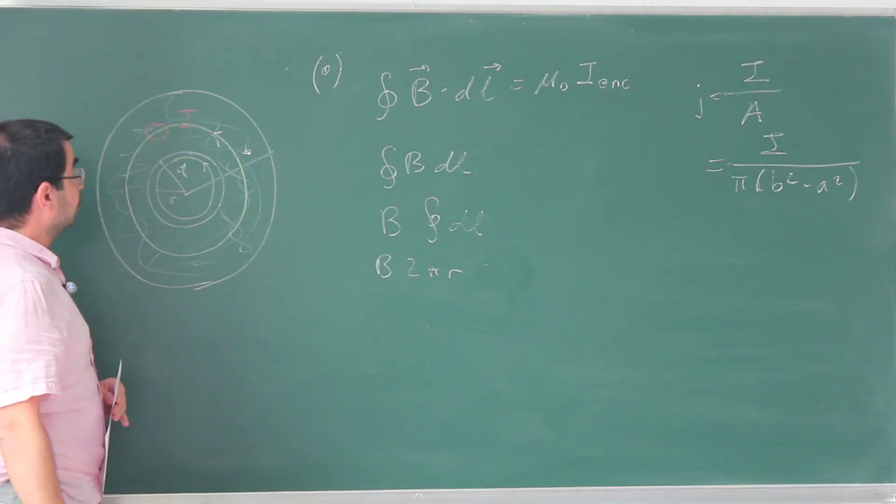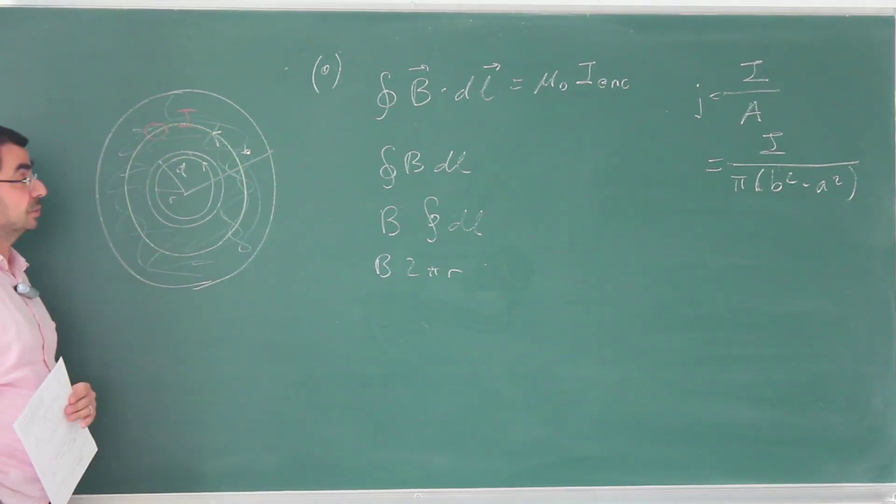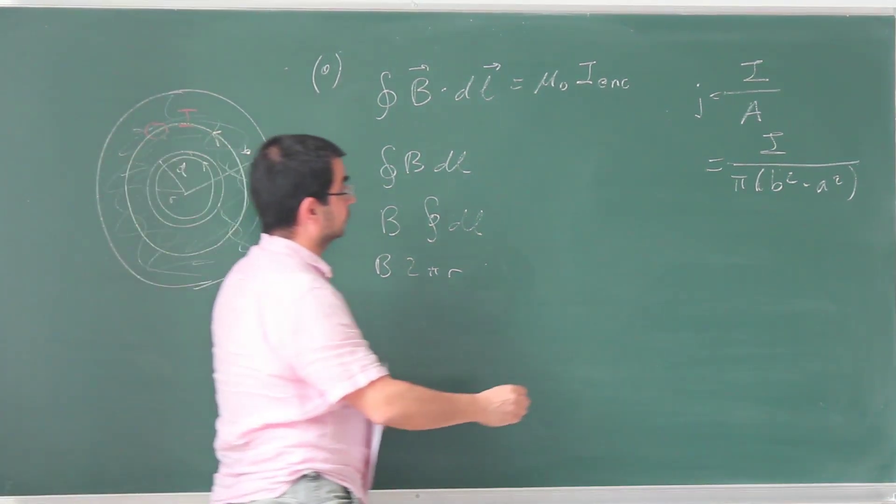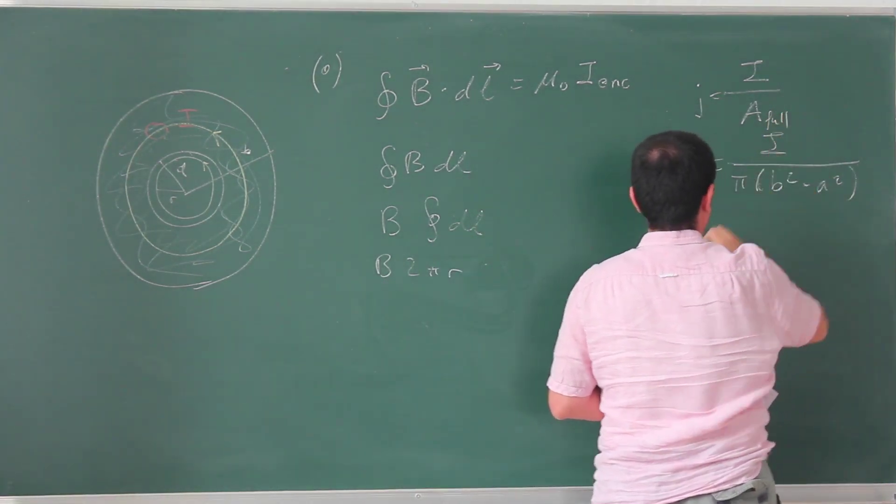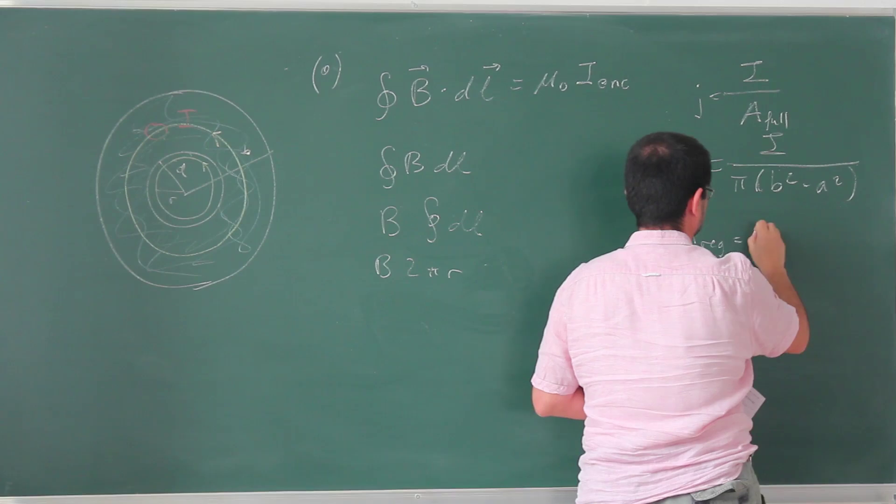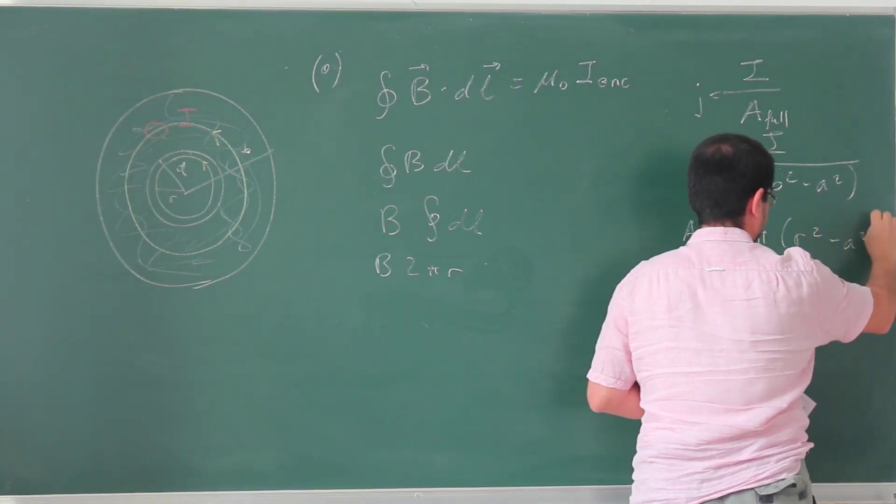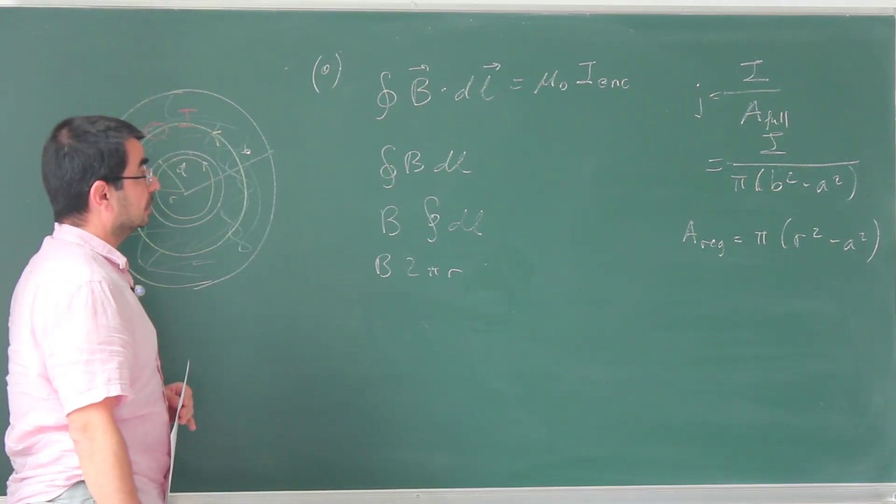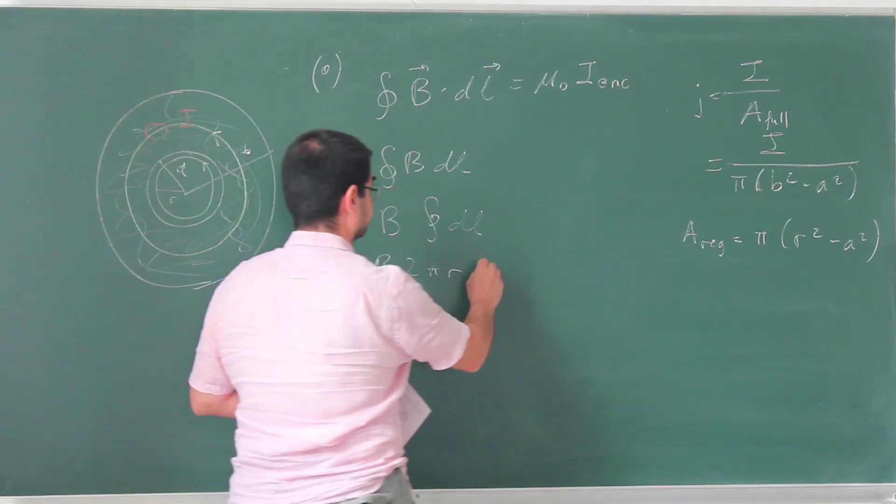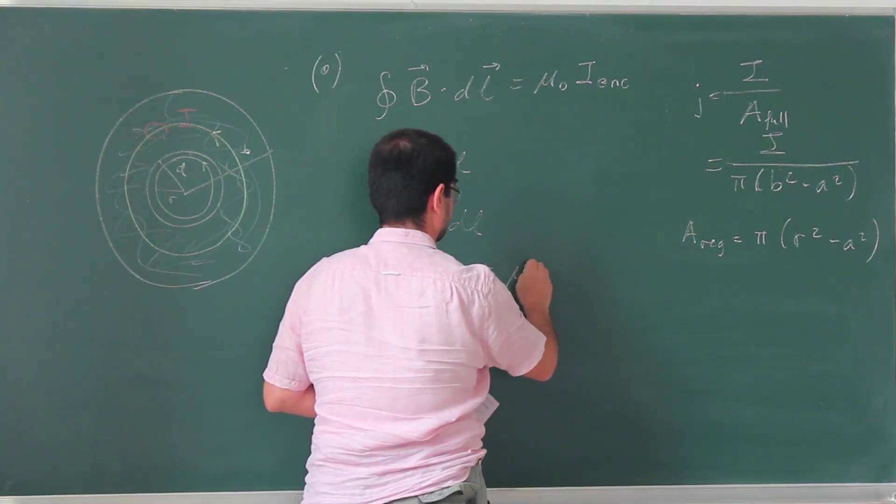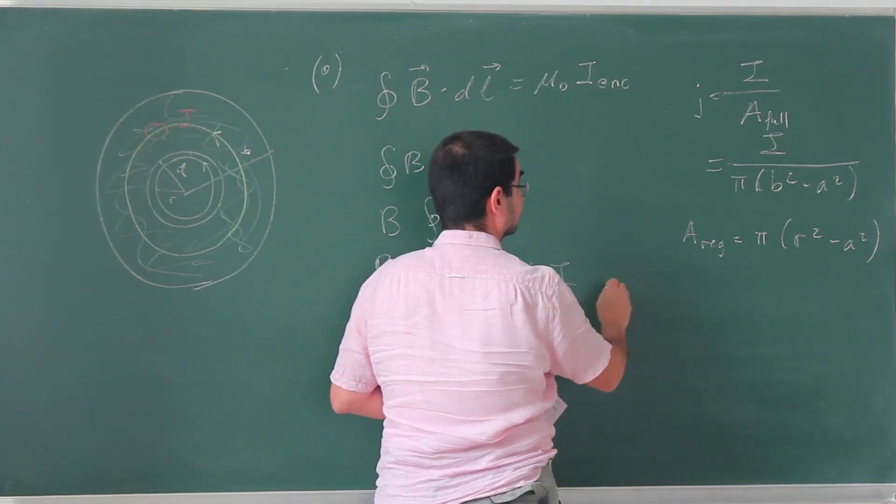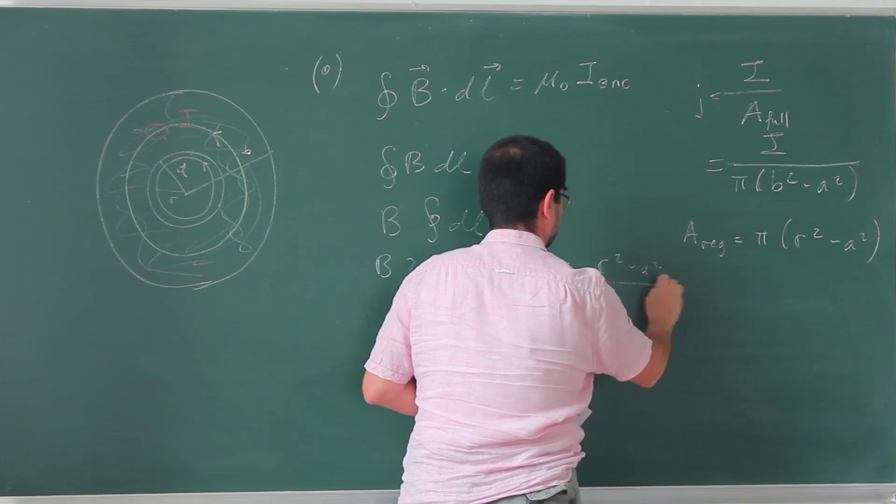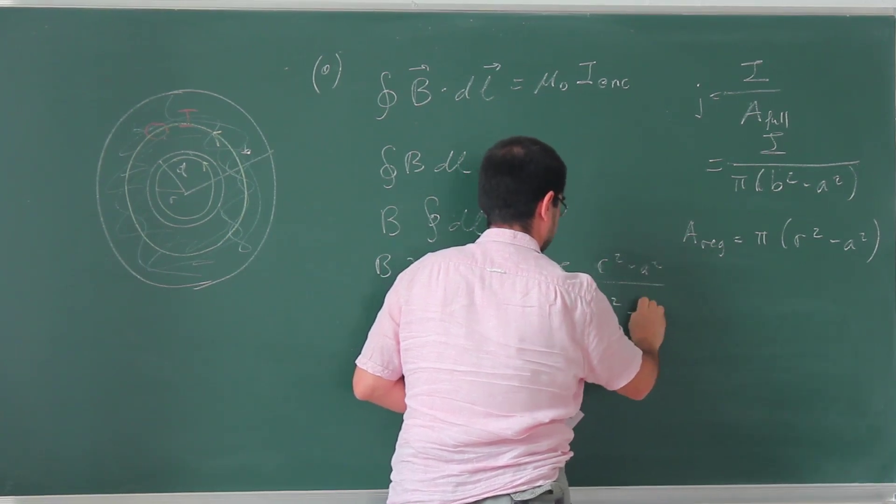And now we have to look at the area of this region. That region is not the full thing. It's going to be part of this. This is a region that we are interested in. It's going to be π(r² - a²). And if you multiply these two, the π's are going to go away. The total current is going to be μ₀ here. The total current is the current times (r² - a²) over (b² - a²).